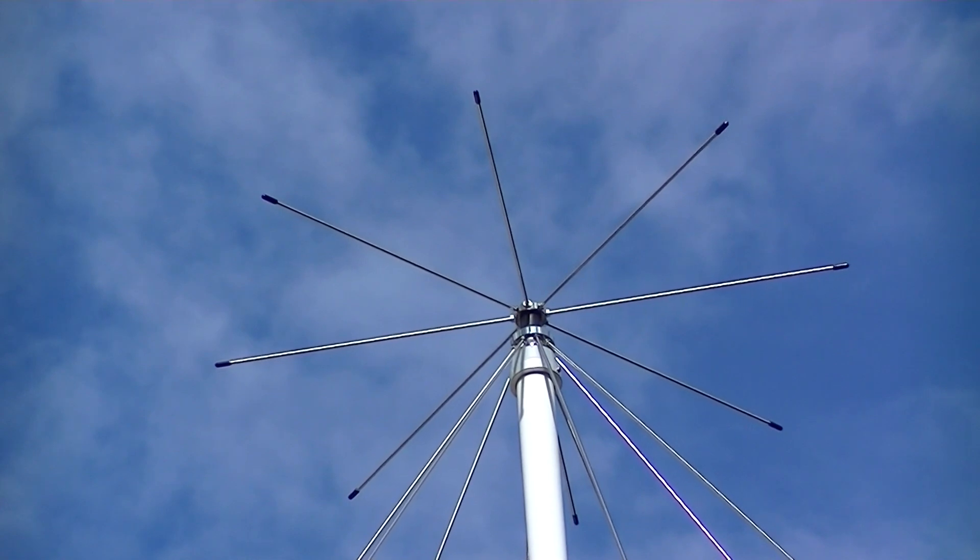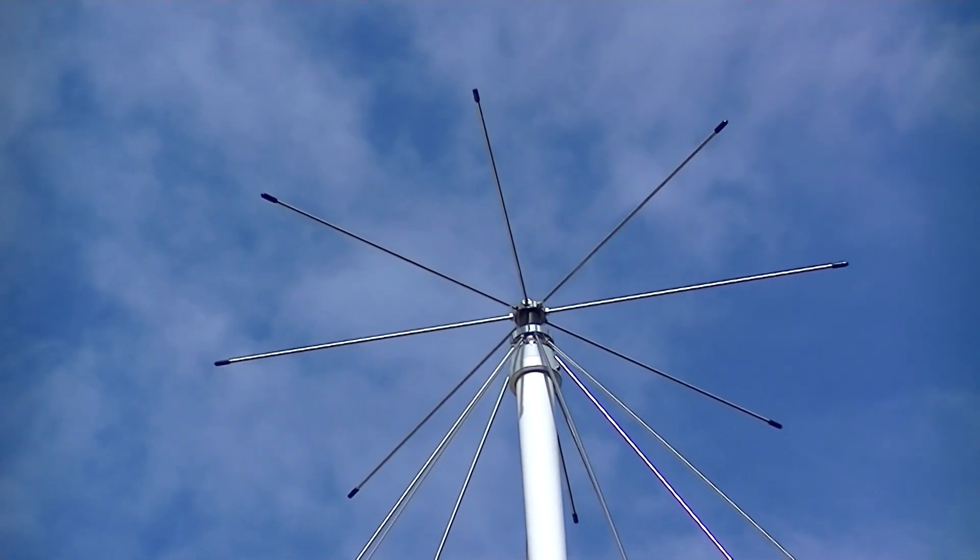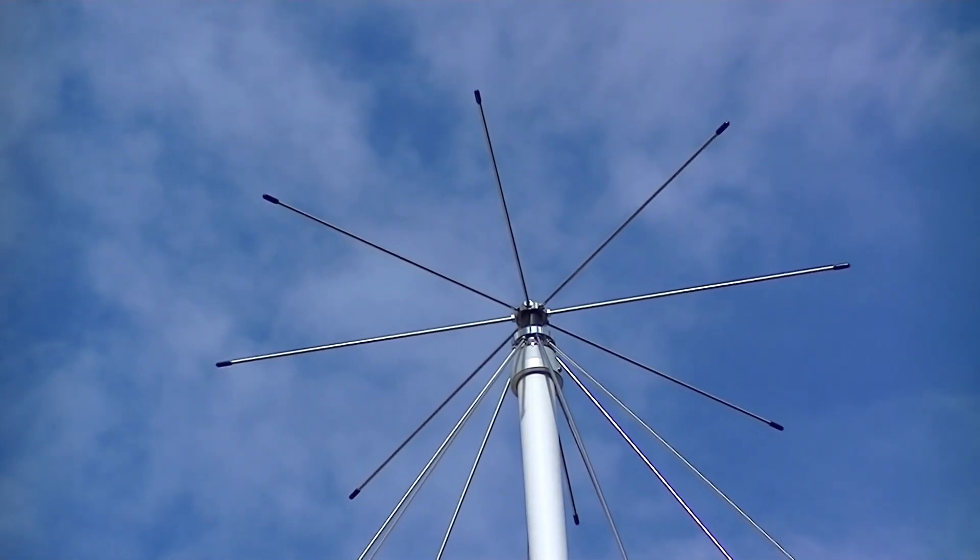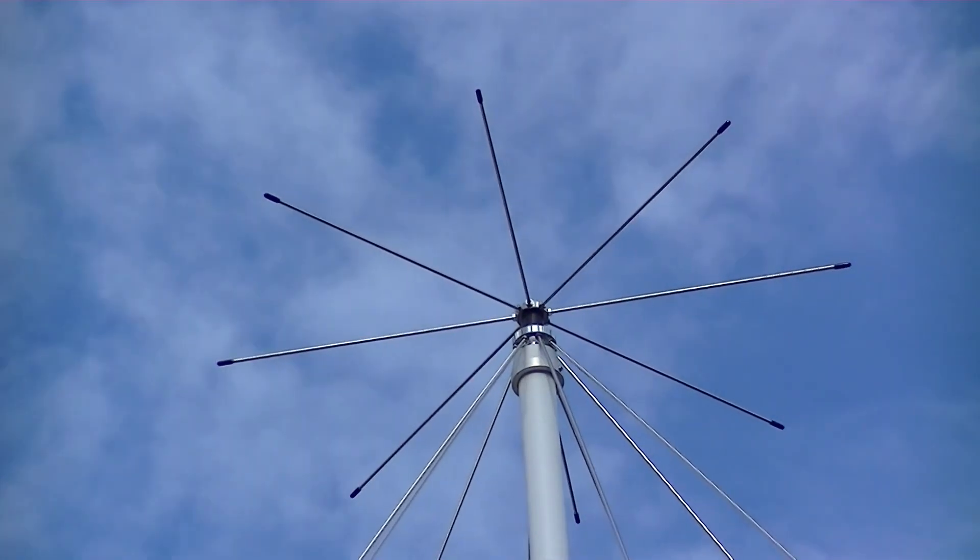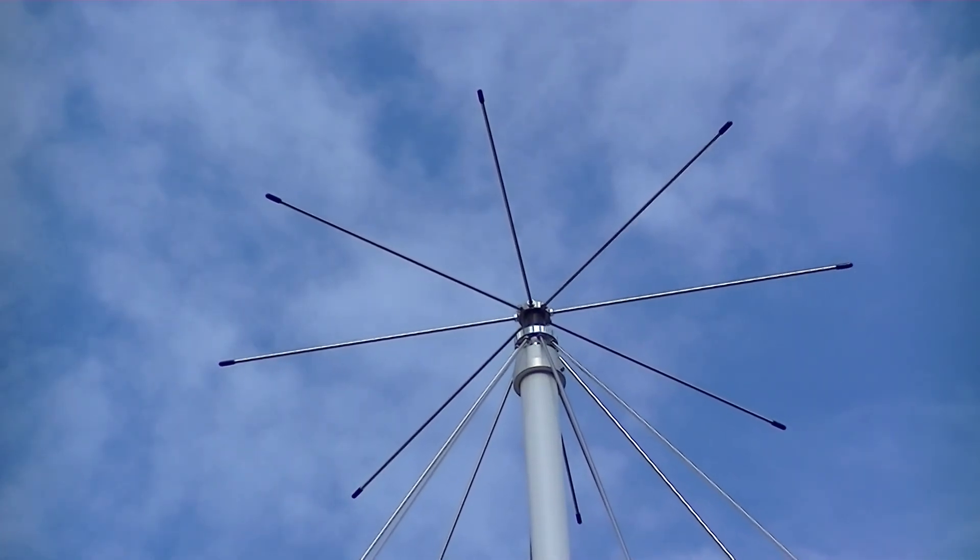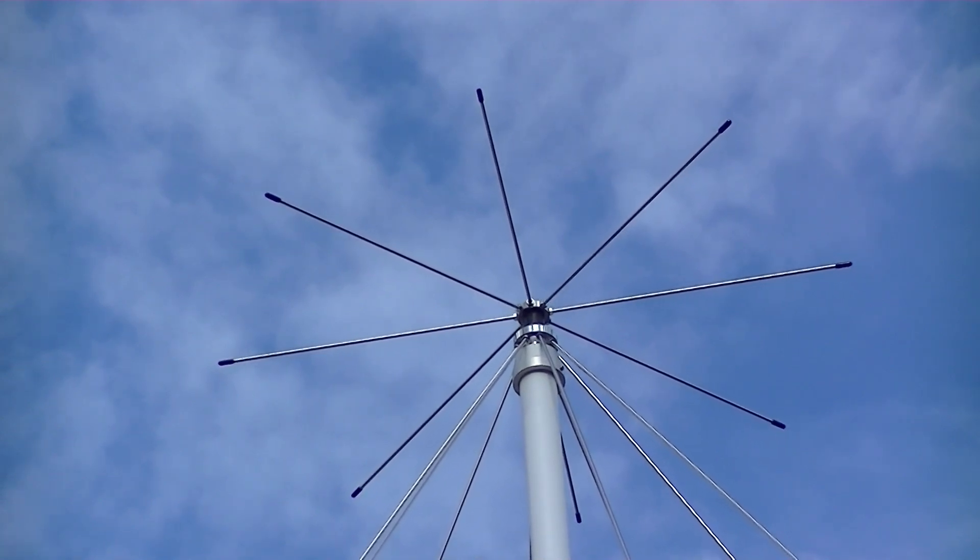This is the disc cone antenna mounted on top of a mast. The stainless steel boss on the bottom of the antenna tightens to a one inch schedule 40 pipe.